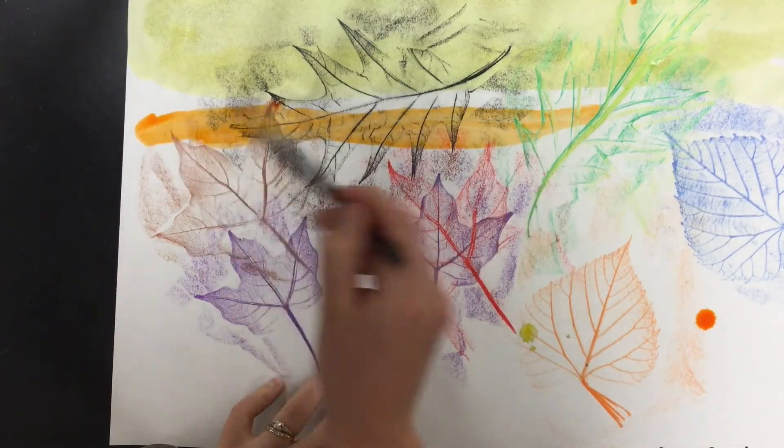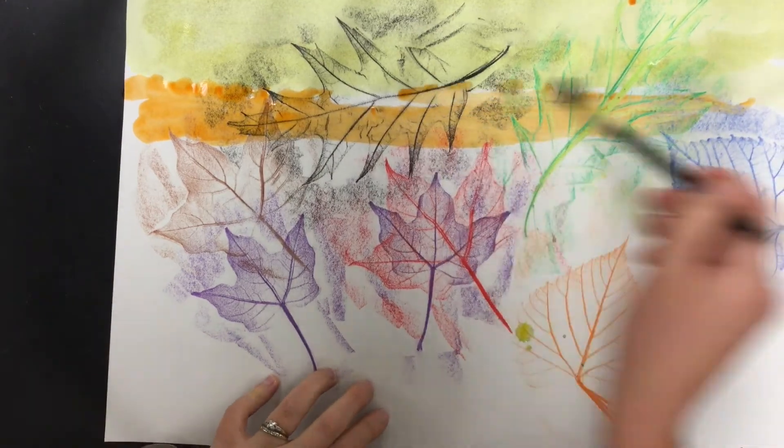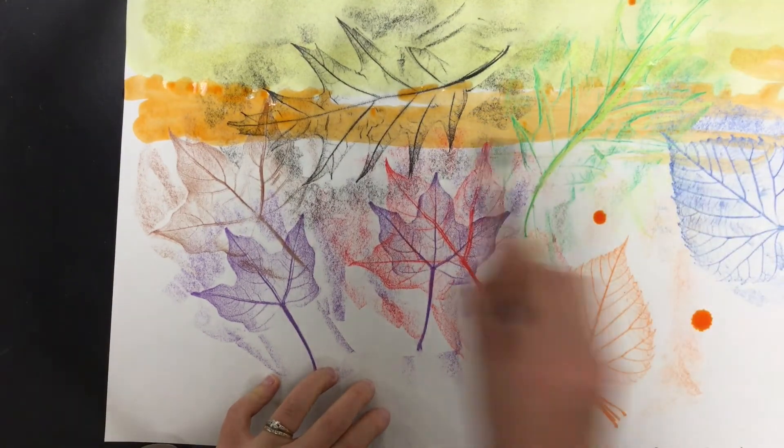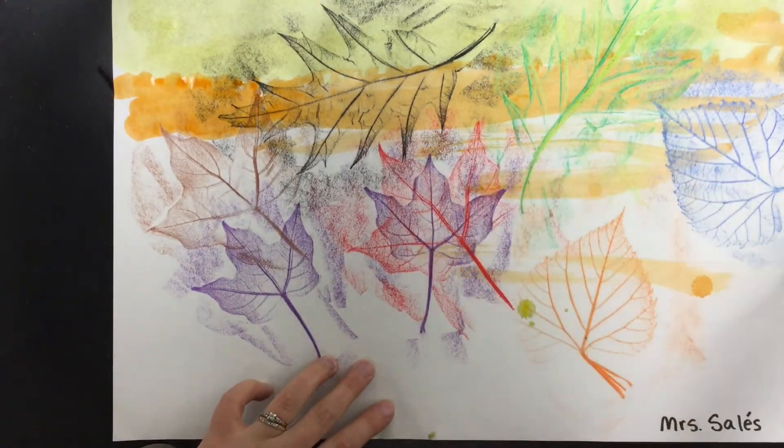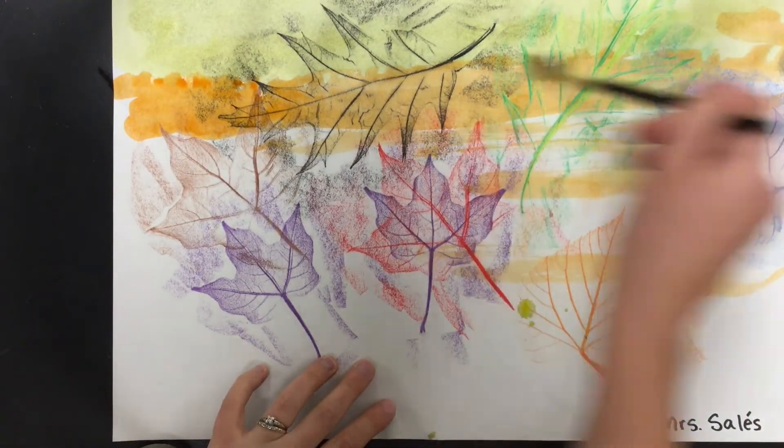And then gently I'm going to spread the orange over the paper. Again you can see the leaves are showing through. I've got a few drips there. I'll just kind of spread those out. It's okay if it drips.